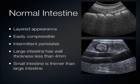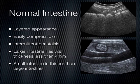Normal intestine has a layered appearance, is easily compressible, and should intermittently peristalse. The large intestine wall is less than 4 millimeters. Small intestine wall is also less than 4 millimeters, probably closer to 3 millimeters — definitely thinner than the large intestine. On ultrasound, the colon has typical haustra, and the right hemicolon is usually filled with stool and gas while the left hemicolon is typically contracted.